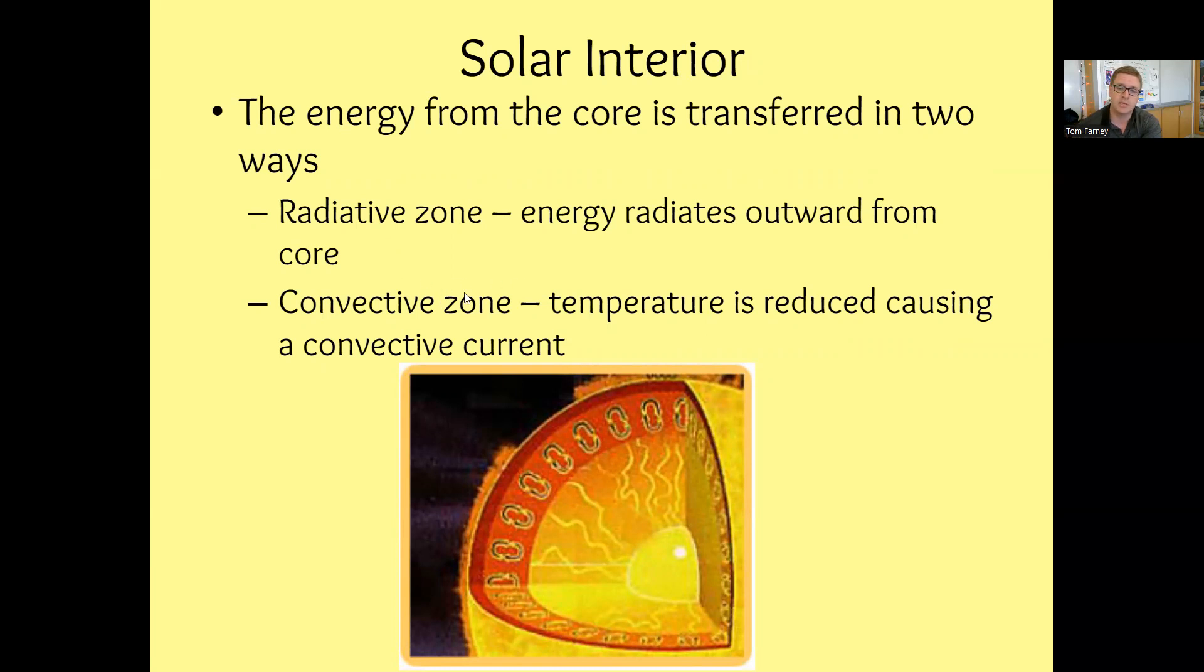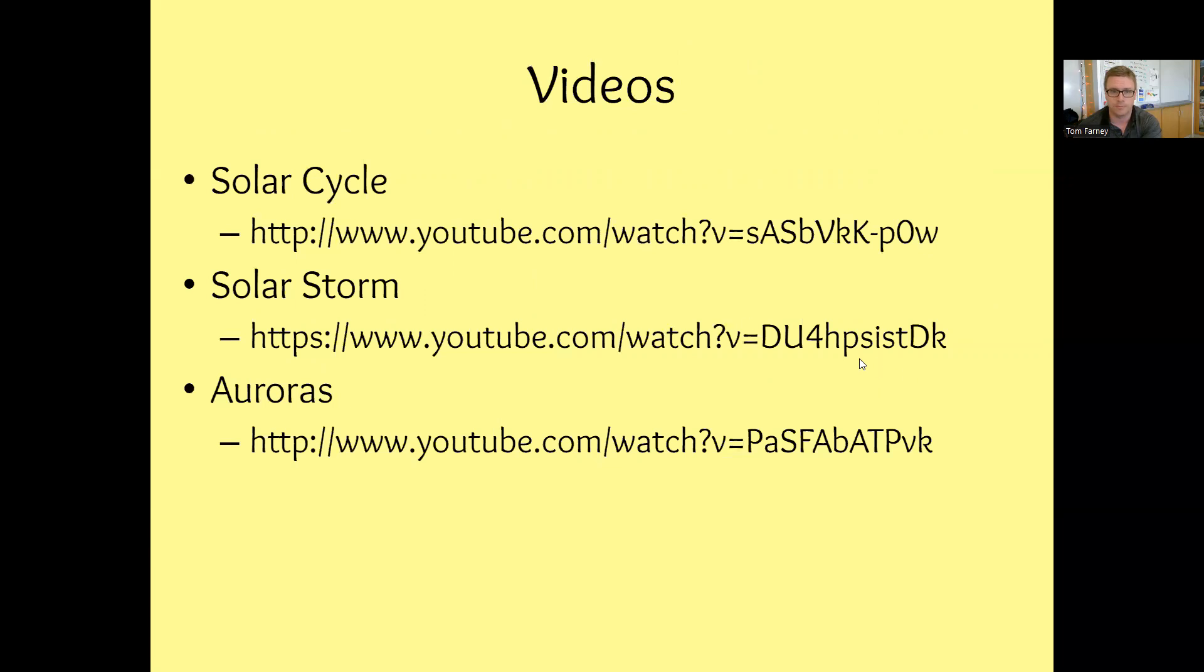The convection zone just helps regulate the overall temperature of the sun so it doesn't get too, too hot. So our convection zone is a means of helping us to maintain equilibrium where our warm material will rise, it'll be cooled by kind of the vacuum chill of space, and then the cooler material will sink back down to the bottom of the convection zone. So this convection is a means of temperature regulation within the sun, very, very important.